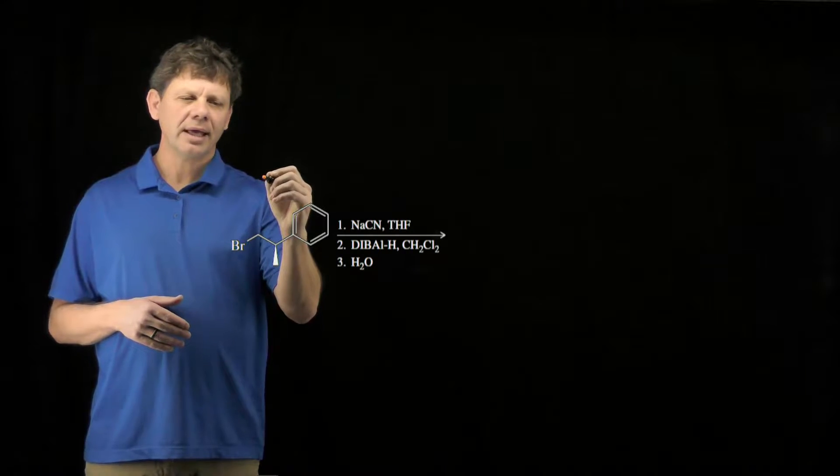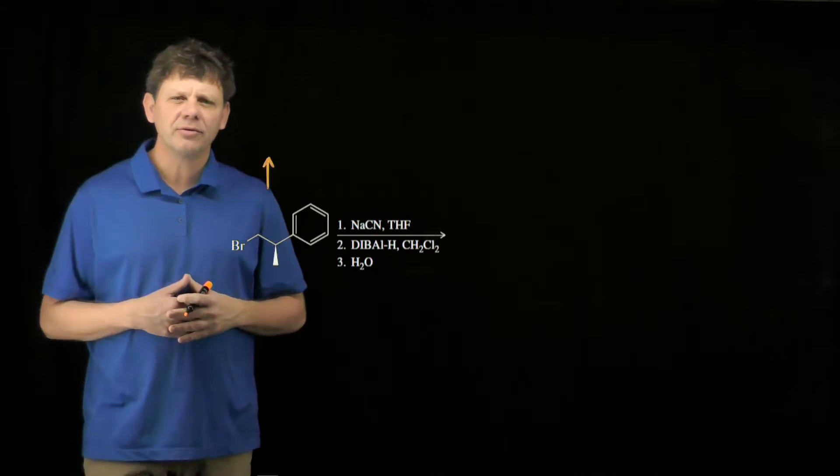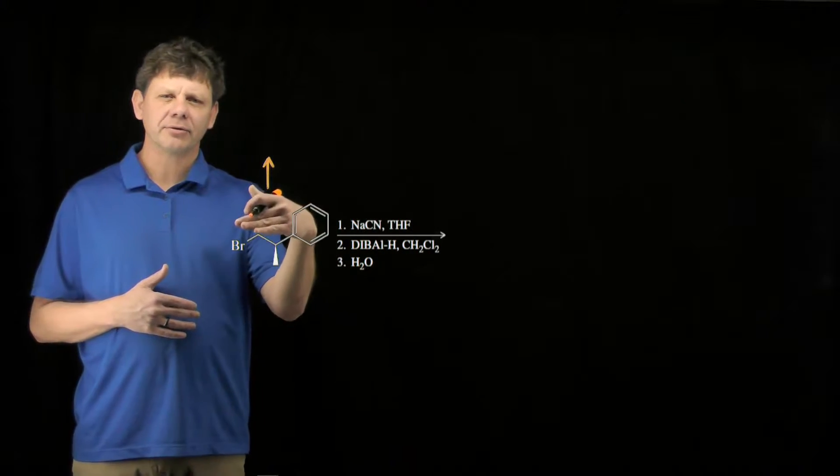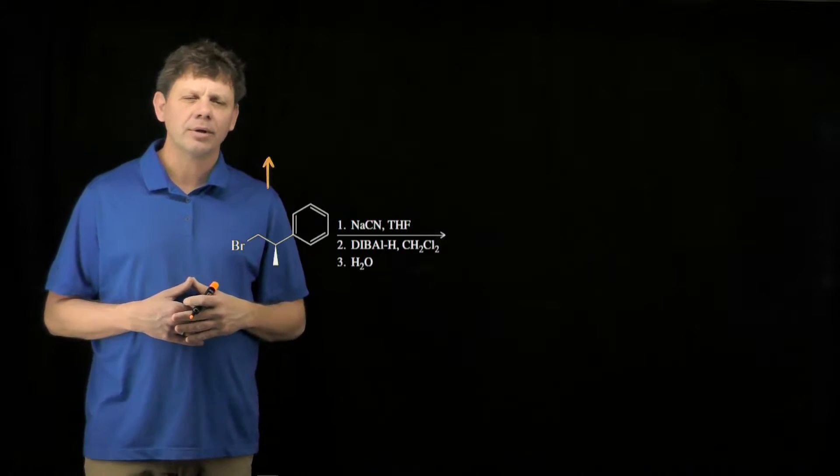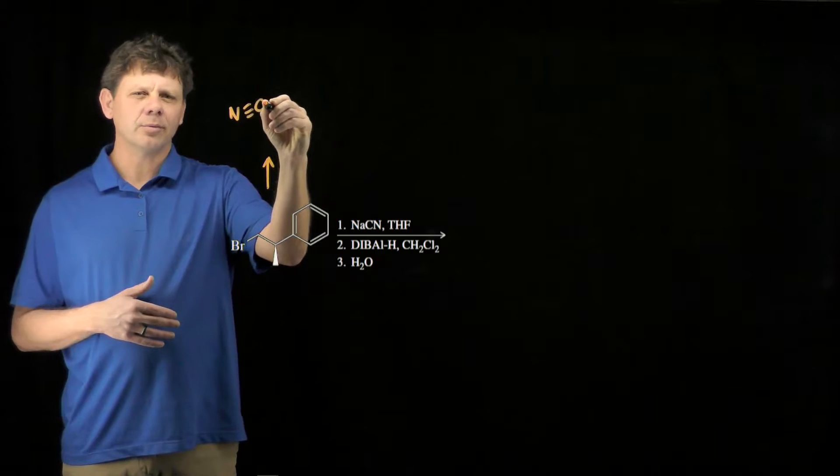As a primary alkyl halide with a good nucleophile, this should remind us of the SN2 reactions we've studied previously. Cyanide can donate a pair of electrons to sigma star and kick out the bromide leaving group to give us this as the resulting product.